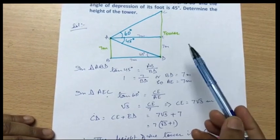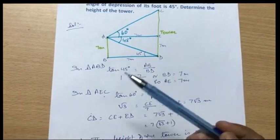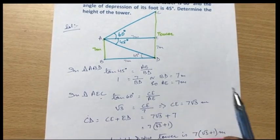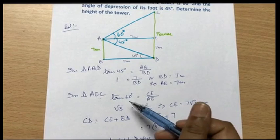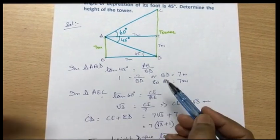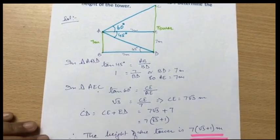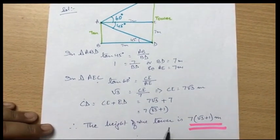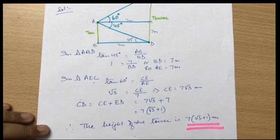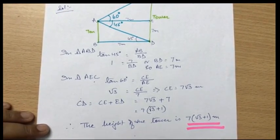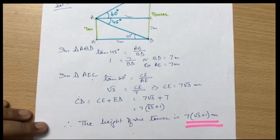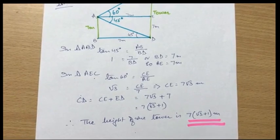These questions are very simple. Most questions up to number 12 use tan 45, tan 60, and tan 30. Remember: tan 30 is 1 by root 3, tan 60 is root 3, tan 45 is 1. Just put the values and get the answer. Today we have done up to question 12, and in the next video we will do questions 13 to 16. Please practice a lot. Thank you and goodbye.